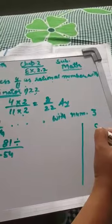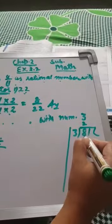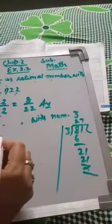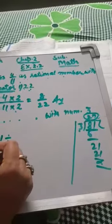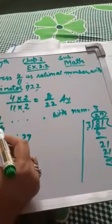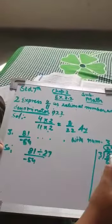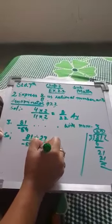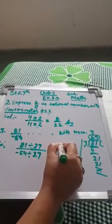For this, you divide 81 by 3. Doing the division: 81 divided by 3 gives 27. This means 27 multiplied by 3 equals 81. So now I will divide both my numerator and denominator by 27. When I divide 81 by 27, I get 3.